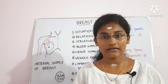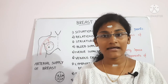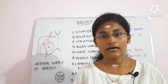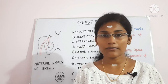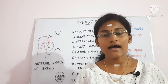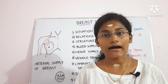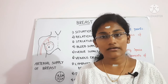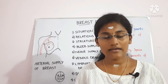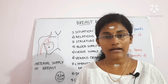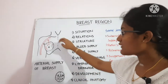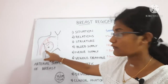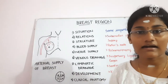The blood supply comes from three main groups of arteries. First, from the axillary artery: the superior thoracic artery from the first part, and the lateral thoracic and acromiothoracic arteries from the second part. Second, the posterior intercostal arteries. Third, the internal mammary (internal thoracic) arteries. All three groups supply the breast.